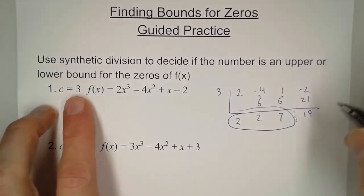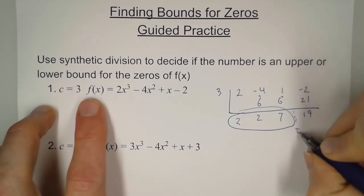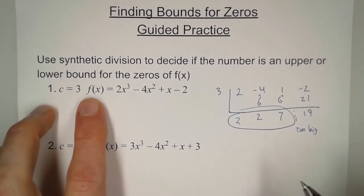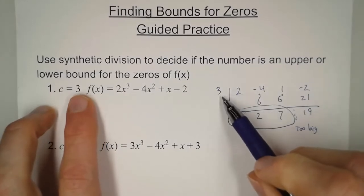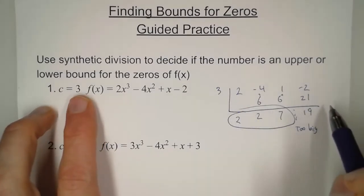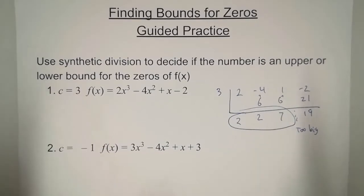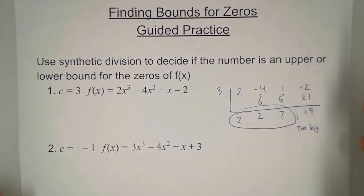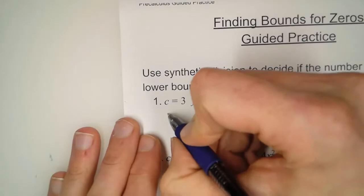But there's something else it's telling us. When all of these numbers are positive, this is telling us that this is too big. So it's saying that any number bigger than 3 will never be a zero. And so anytime the number is always positive, that's what that's telling you. So this is an upper bound.